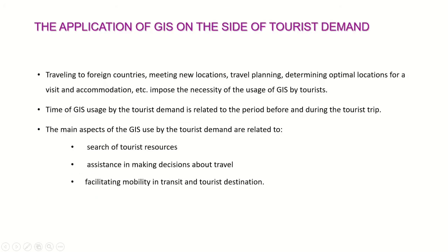On the side of tourist demand, traveling to foreign countries, meeting new locations, travel planning, and determining optimal locations for visits and accommodation all necessitate the use of GIS by tourists. GIS usage by tourist demand is related to the period before and during the tourist trip. The main aspects include: search for tourist resources, assistance in making travel decisions, and facilitating mobility in transit and at tourist destinations.